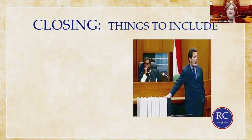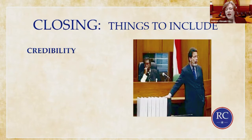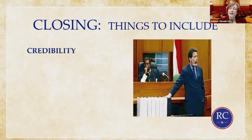Let's talk about what kinds of things to include in your closing. At the beginning of the trial during opening, you don't know whether the witness is going to look like he or she is telling the truth. But in closing argument, you can talk about what's called the credibility of the witness — how believable was each witness? What were their motives? What were their biases? Why might they have a reason to lie?